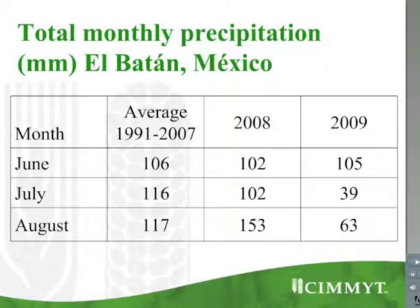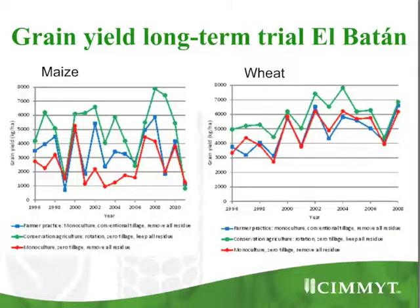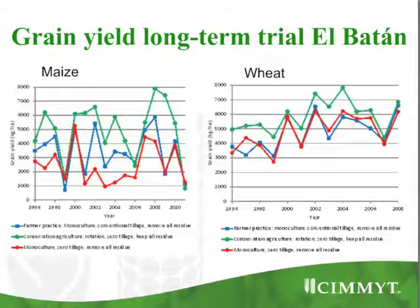In 2009 we had much less rainfall, especially in July and August. You can see a nice looking crop on the left side and a not so nice looking crop on the right side. The left side is conservation agriculture in 2009, and the right side is the same farmer practice — maize-maize, no crop rotation, taking away all the residue, and doing conventional tillage.